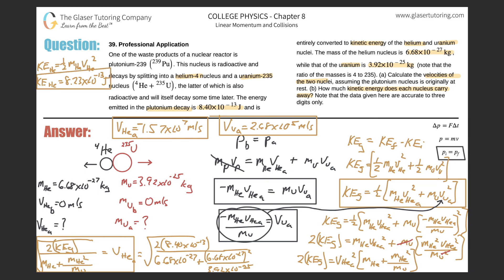Now doing the same for uranium: the kinetic energy of uranium equals one half times the mass of uranium multiplied by the velocity of uranium squared. That's 0.5 times 3.92 times 10 to the minus 25, multiplied by 2.68 times 10 to the fifth squared. We get 1.41 times 10 to the minus 14 joules.